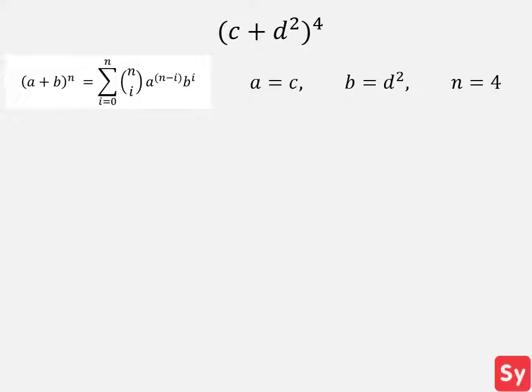Last example, we have c plus d squared to the 4th. Let's take a look at the formula. We can see that in this example, a equals c, b equals d squared, and n equals 4. Now we can plug these values back into the formula.